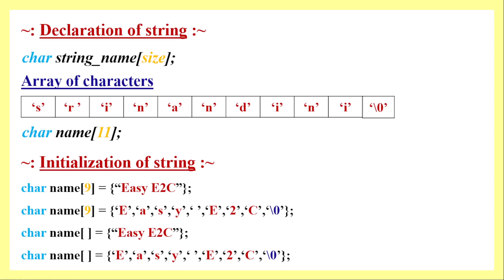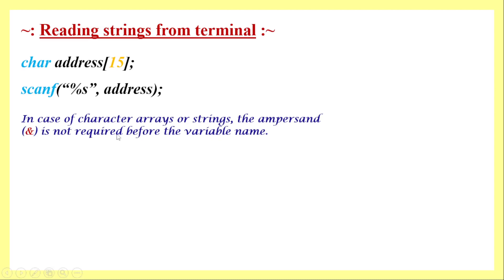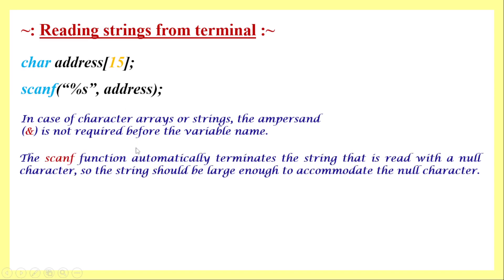Next is reading a string from the terminal. The string variable is declared with a total size of 15, including the null character. This is the syntax of the scanf function — within double quotes we use the format specifier '%s' for string, then a comma, then the variable name. One key difference is that before the string variable name we do not need to mention an ampersand, unlike with integer, float, or single character variables.